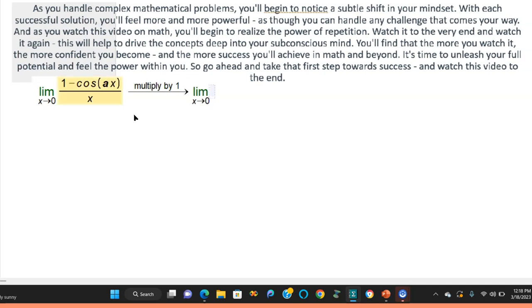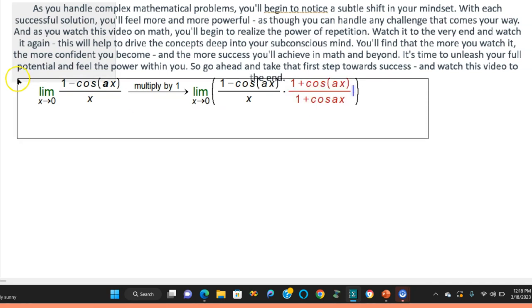You're going to have the limit as x goes to 0, and then 1 minus cosine ax divided by x. And then you're going to have here multiplying by 1. The 1 that we're going to use looks like this: 1 plus cosine ax over 1 plus cosine ax.